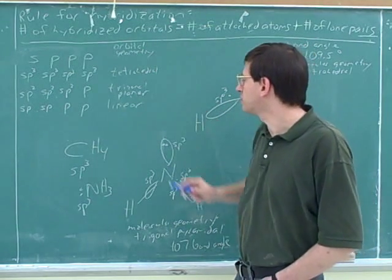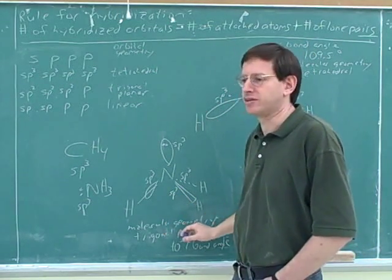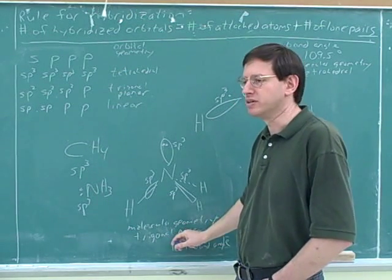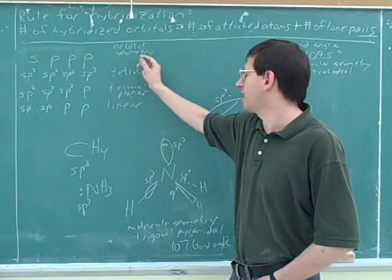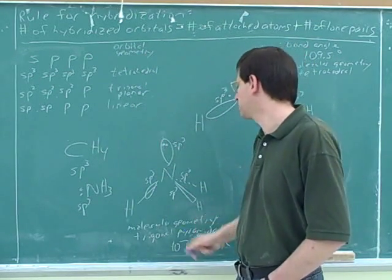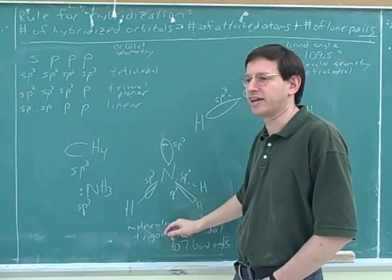But on the test, they're not going to ask you for the orbital geometry. They're going to ask for the molecular geometry. Well, molecular geometry here would be trigonal pyramidal. But you still need to know the orbital geometry to figure out what this looks like. So you can figure out the orbital geometry first, but it's the molecular geometry that they're likely to ask you about.